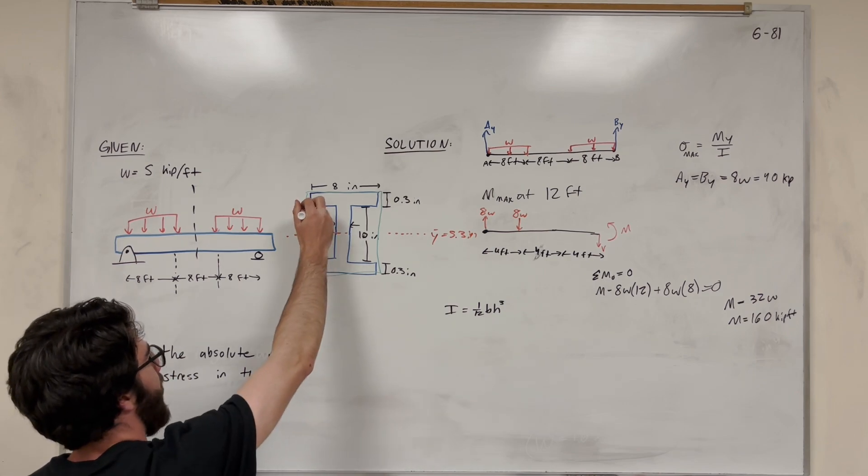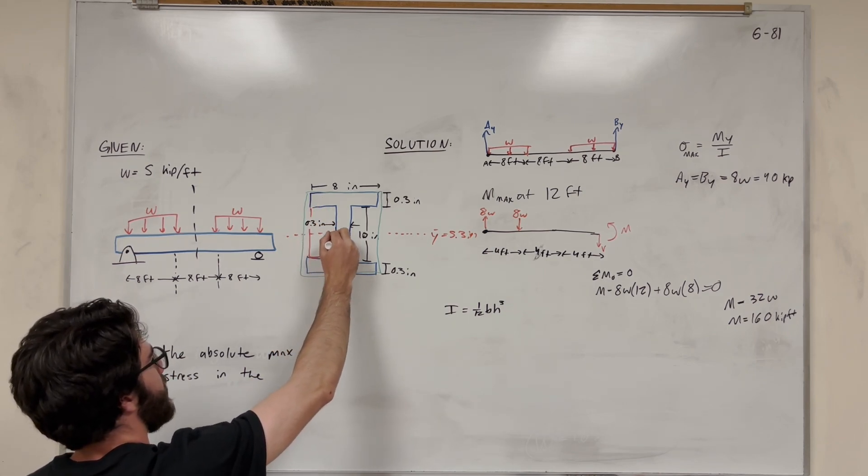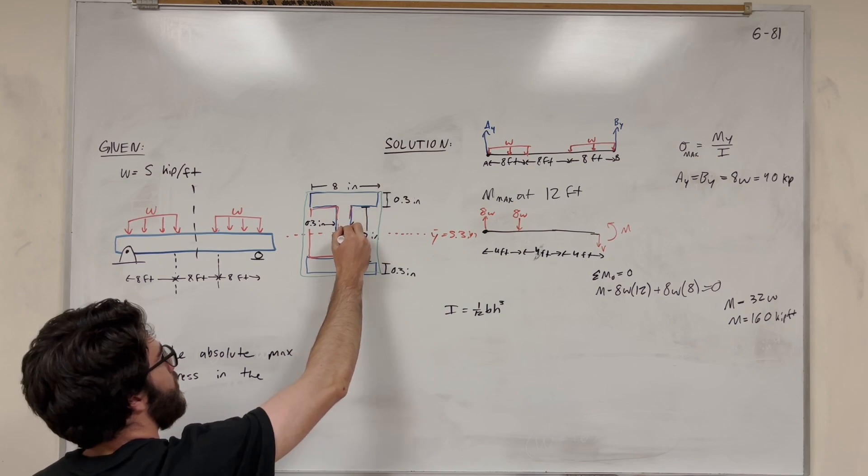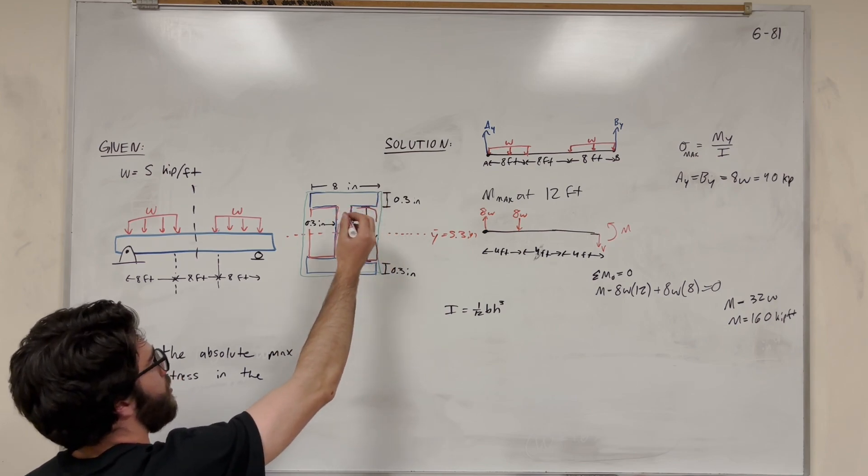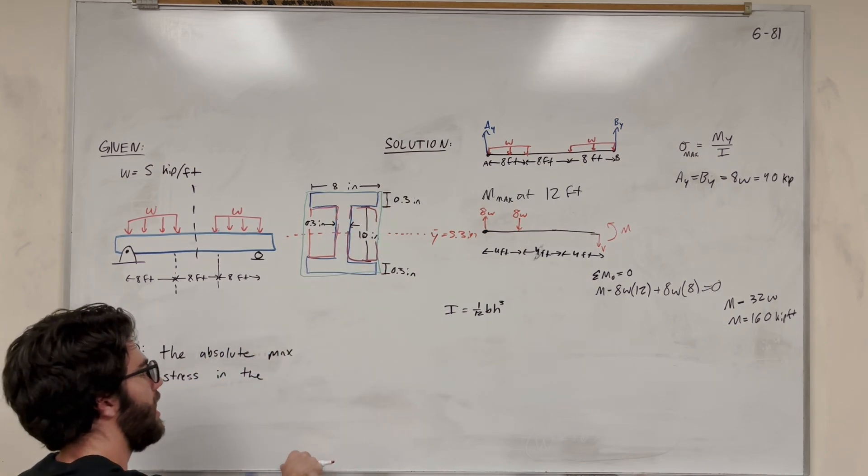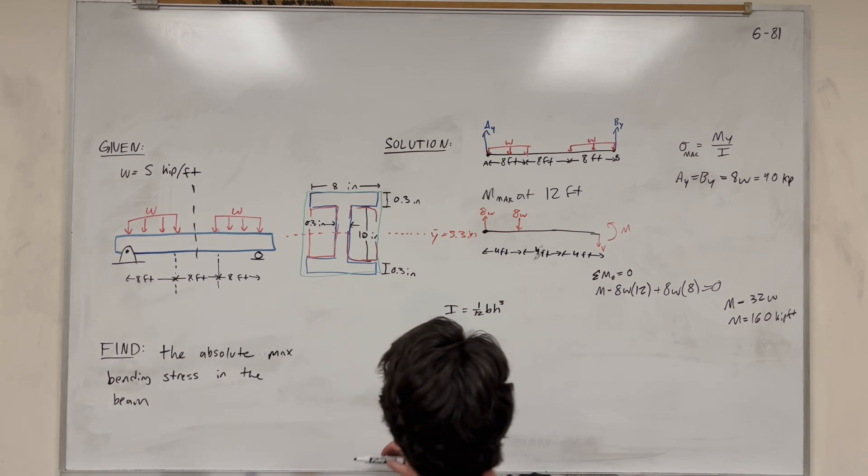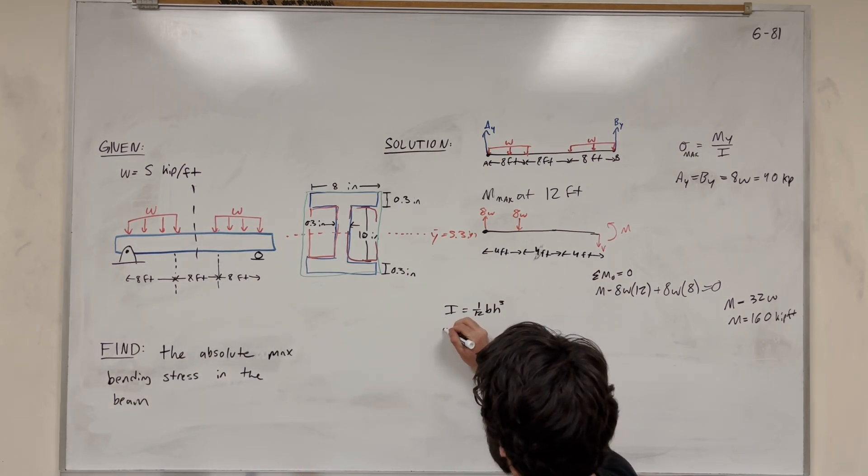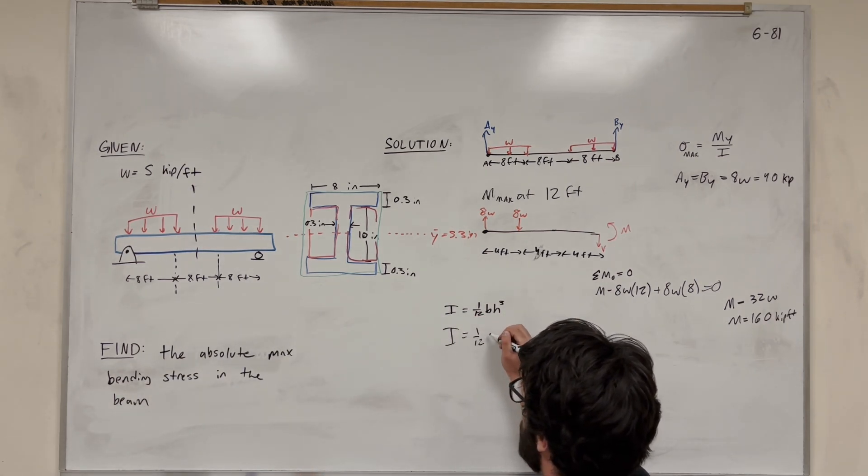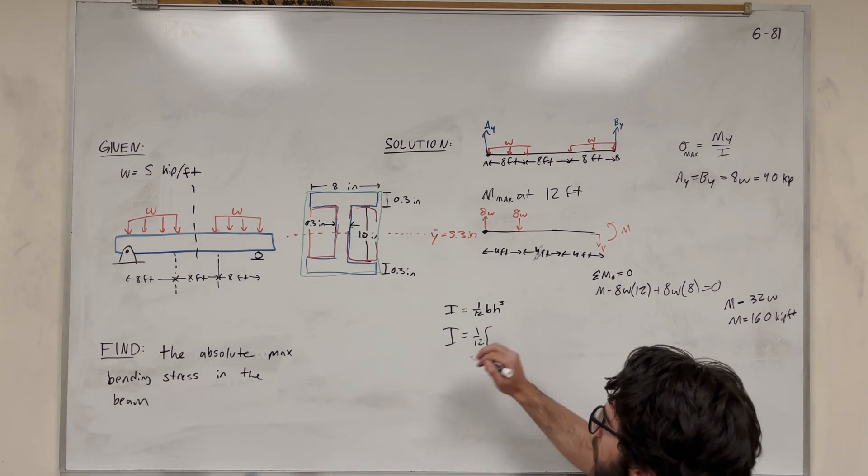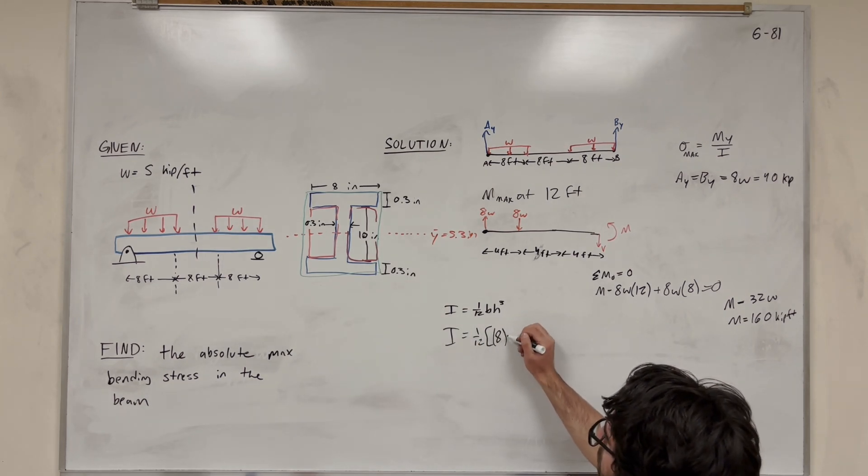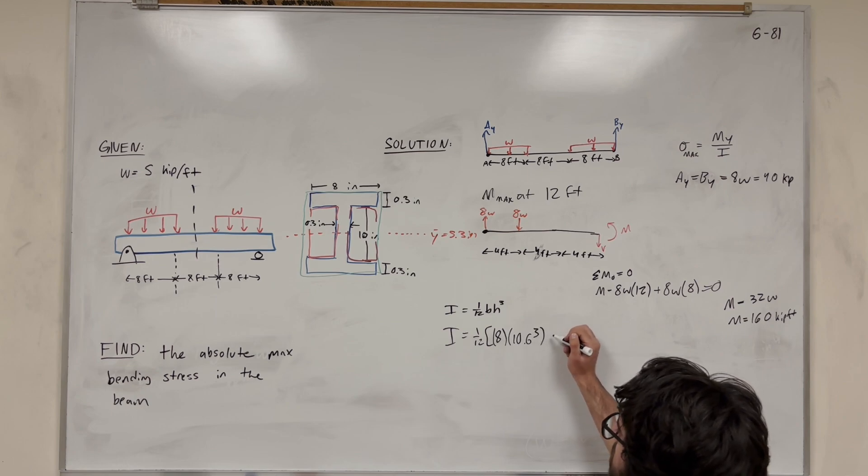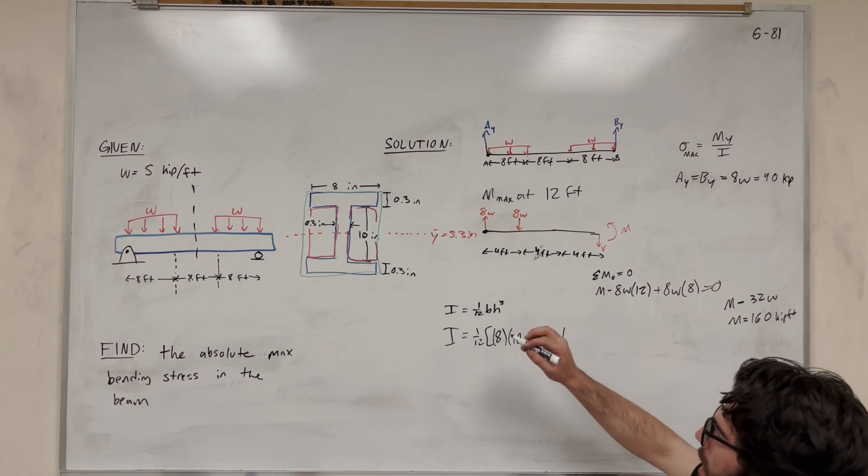So we're going to take all of that, and then we're going to subtract it by these rectangles here. So we take the moment of inertia of the green rectangle and subtract it by the moment of inertia of these two rectangles. So we're going to go I, right? Because if you go 1/12, we can factor out the 1/12. So for the green rectangle, the base is 8 inches, and the height is 10.6 inches. Cube that.